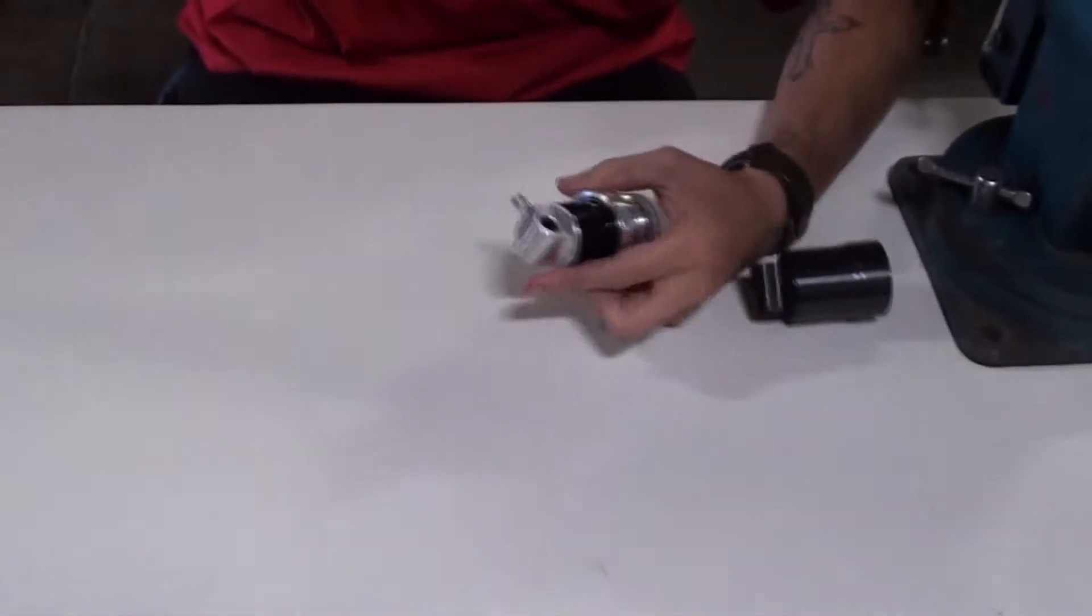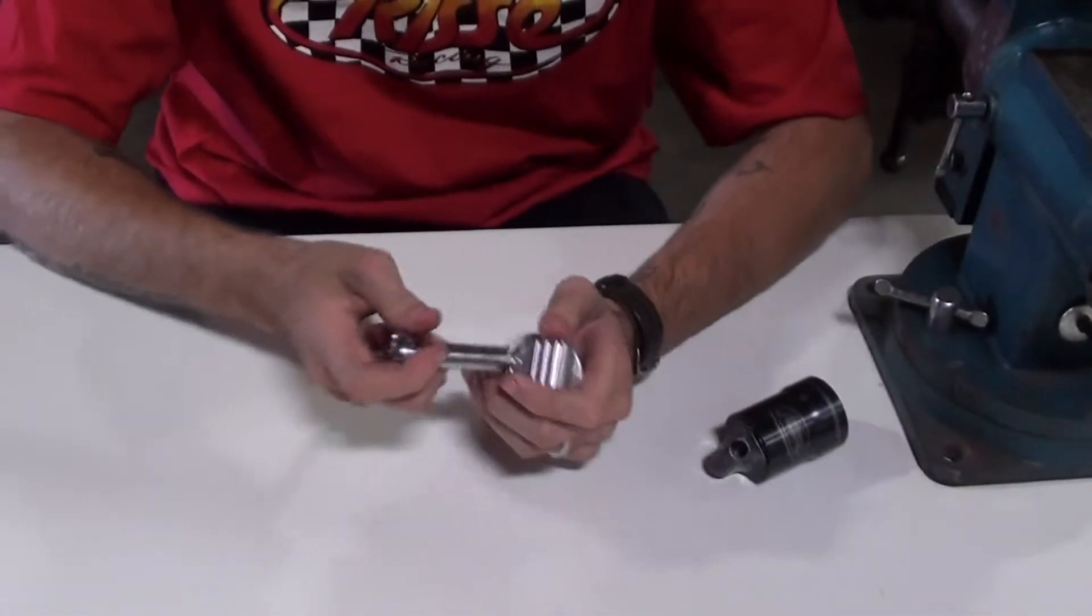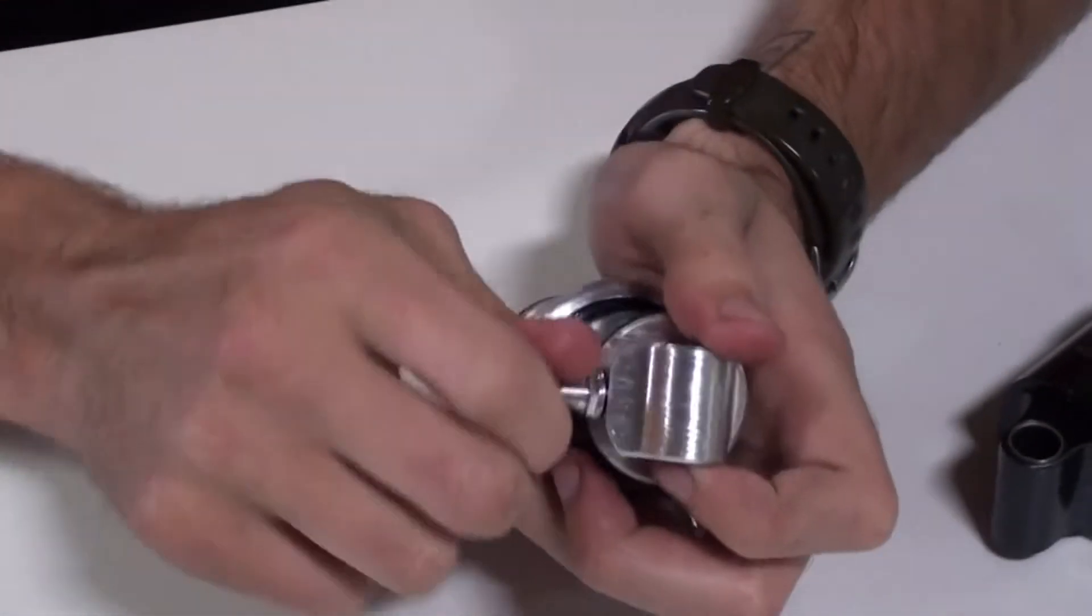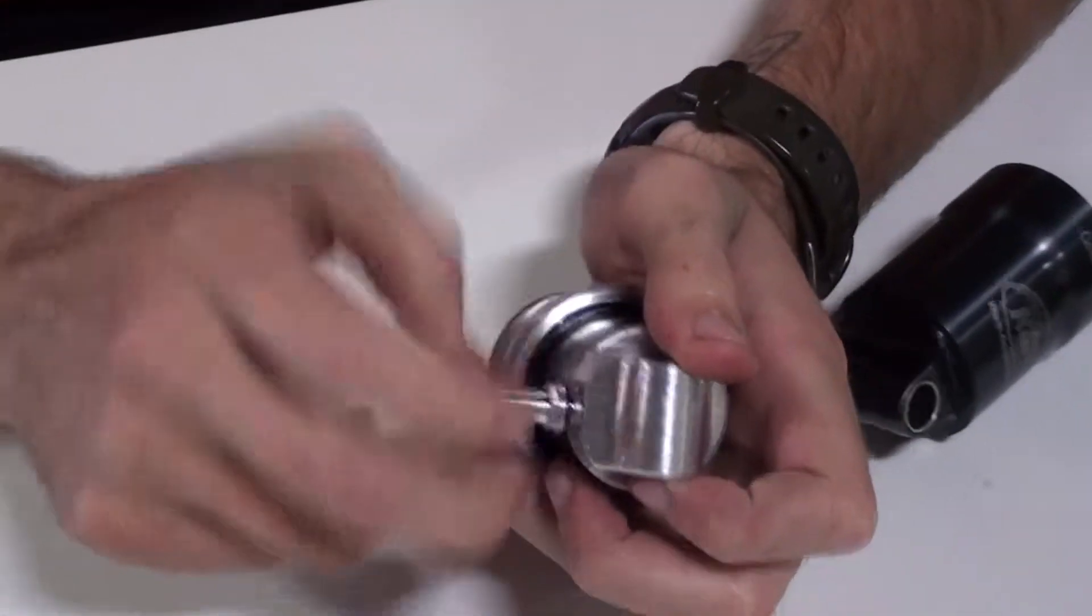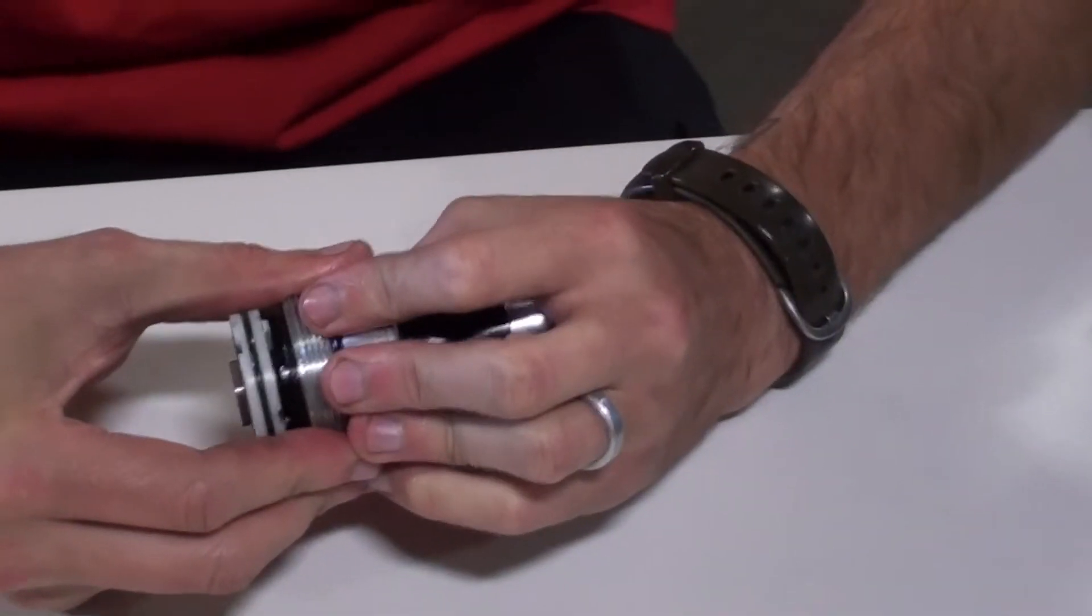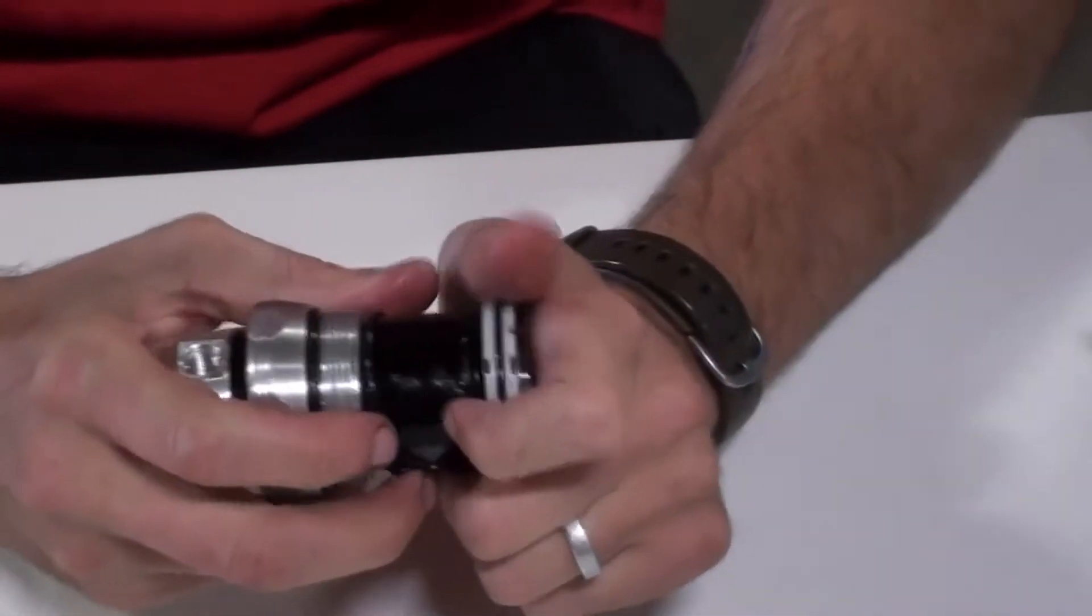Using a 10mm socket, take your Schrader valve off. Slide your bearing up towards the eyelet.